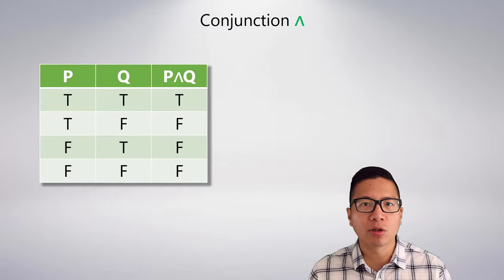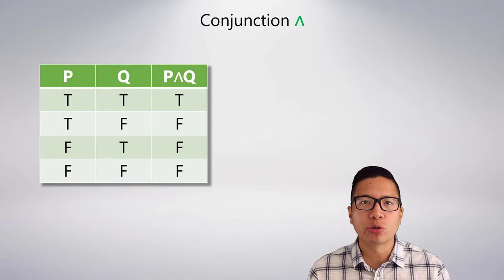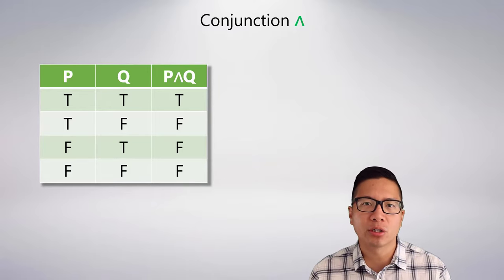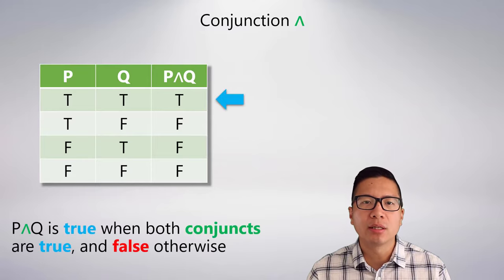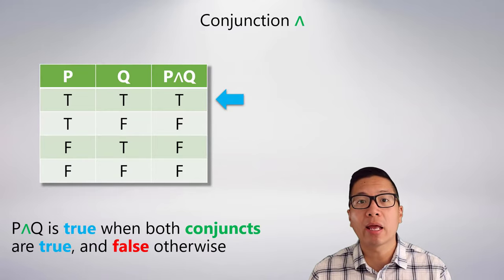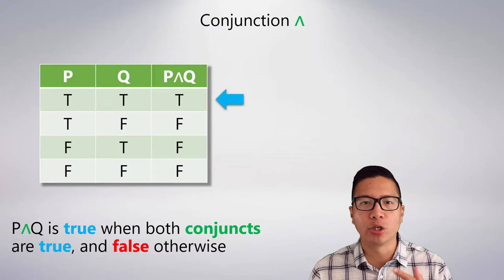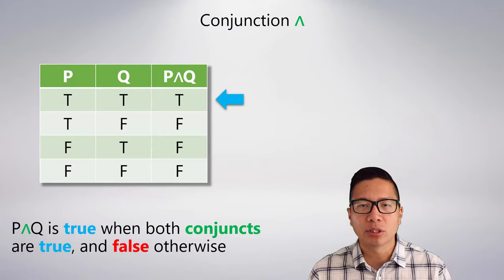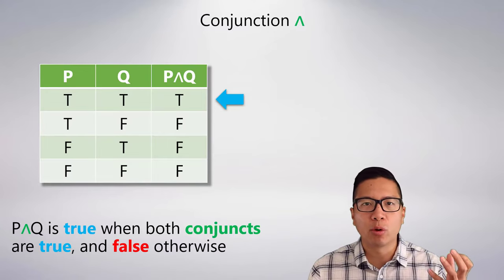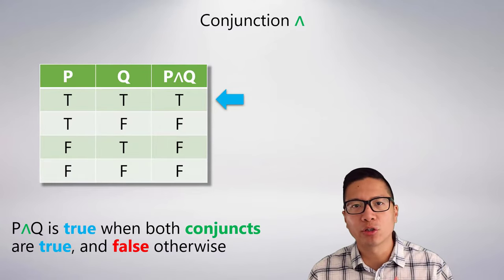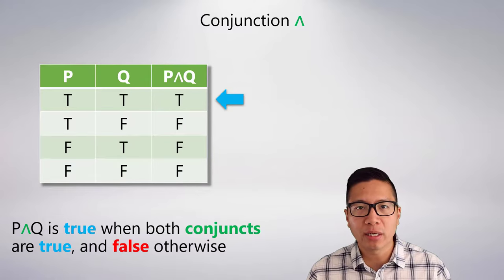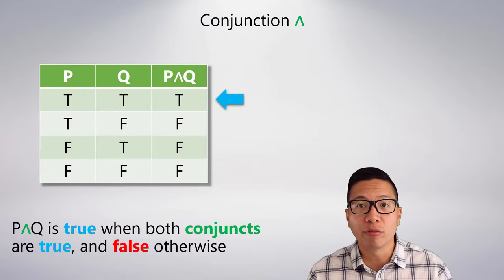The rest of the connectives are also very straightforward. Here's the truth table for conjunction — the fancy word for 'and.' There is only one condition where an 'and' statement is true: P and Q is true when both conjuncts are true and false otherwise. This makes sense: if I want fries and salad, the only way that ends up being true is if I end up getting both.